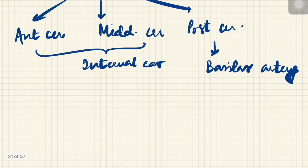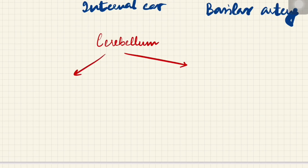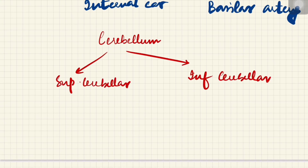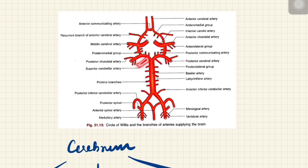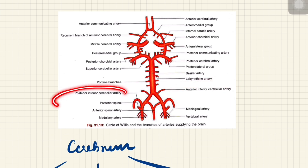The cerebellum is supplied by two main arteries: the superior cerebellar artery and the inferior cerebellar artery. The superior cerebellar artery is only one, but the inferior cerebellar arteries are two — the anterior inferior cerebellar artery (AICA) and the posterior inferior cerebellar artery (PICA). The superior cerebellar artery comes from the posterior cerebral artery. The posterior inferior cerebellar artery arises from the vertebral artery, and the anterior inferior cerebellar artery arises from the basilar artery.